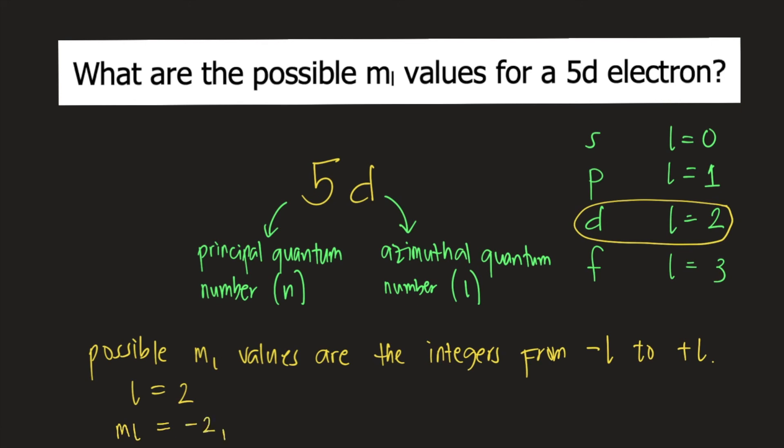So that will be negative 2, negative 1, 0, positive 1, and positive 2. So there are 5 values for M sub L for a 5D electron. And these are the answers.